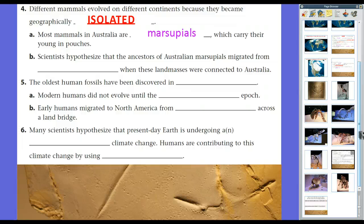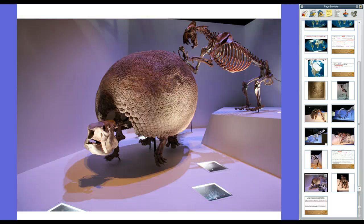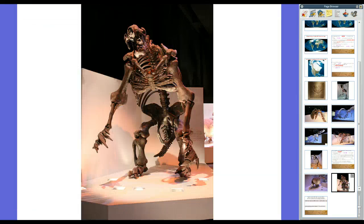Like, this glyptodon, which is essentially a car-sized armadillo. And you see it's being attacked by a saber-toothed cat. But because this carapace, this shell, is so hard and so armored, there's no way he can break through it.